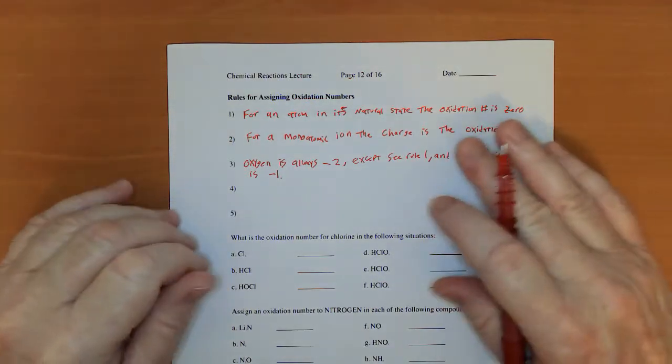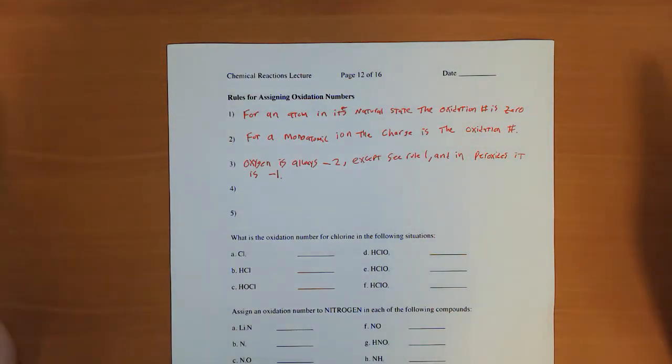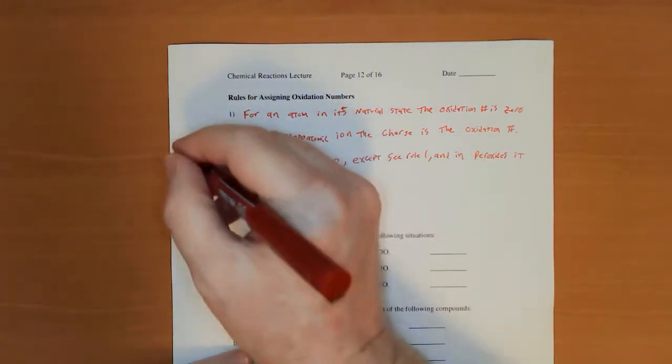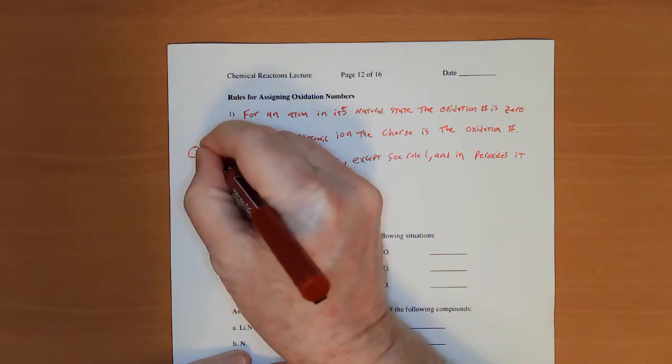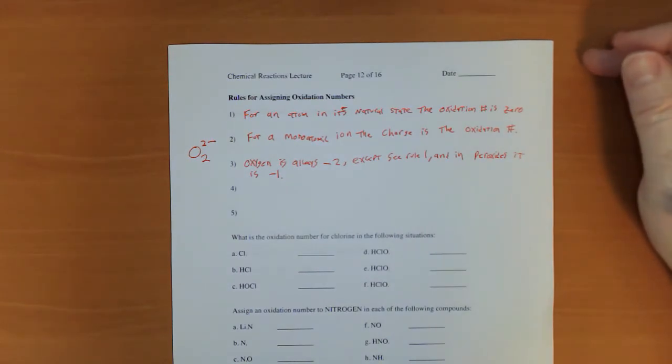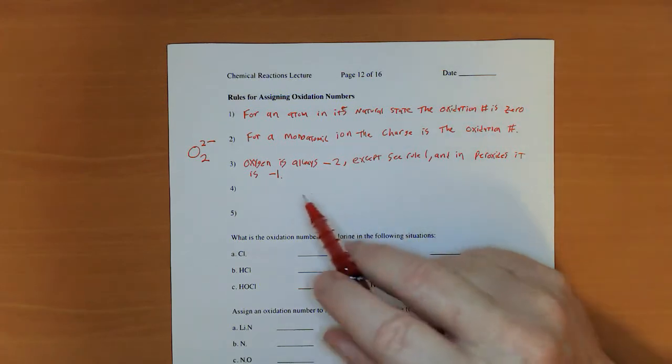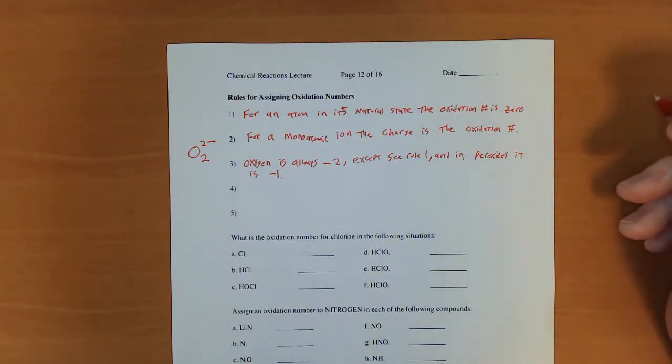Now we don't talk that much about the peroxide ion. And maybe I should add it to your stack of flashcards. I'm just trying to keep that stack from being too big. The peroxide ion is O2 with a two minus charge. So each oxygen in there has a minus one charge.